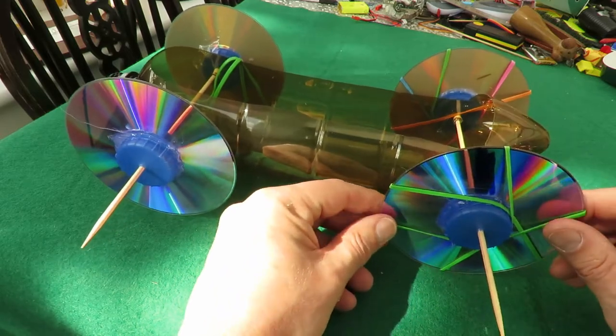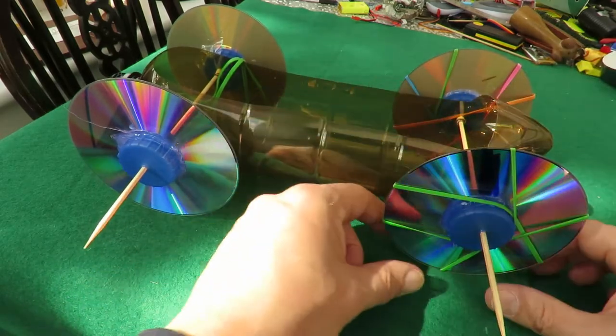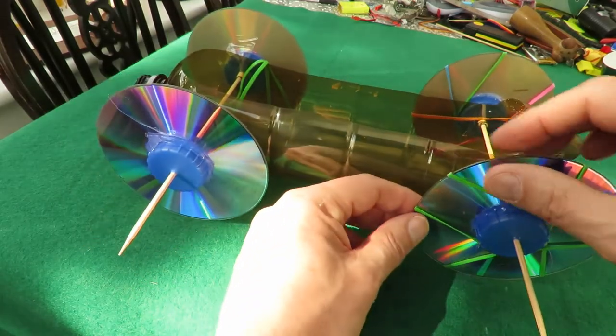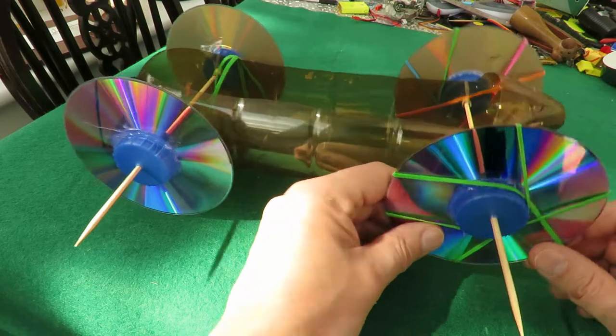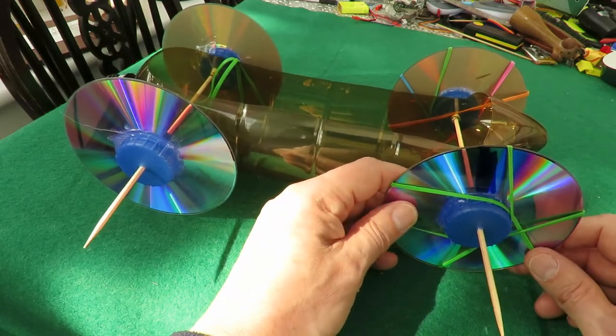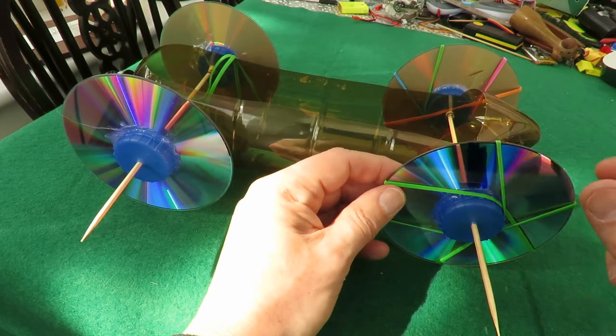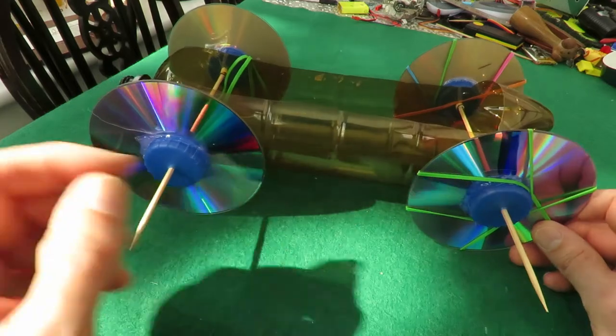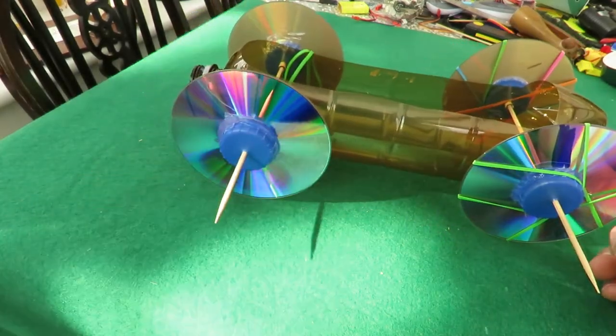Or you can cut up a balloon into a strip and cut straight across the balloon into strips and stretch them around the outside. Or I like to use old rubber gloves, washing up gloves, because they're a thicker rubber and they make really good tires. And there will be links in the video description on how to do that.